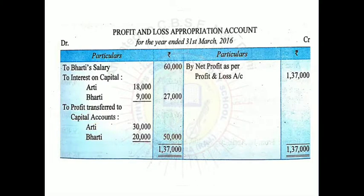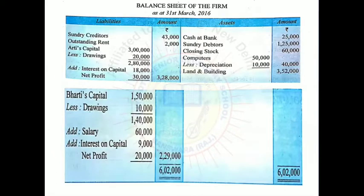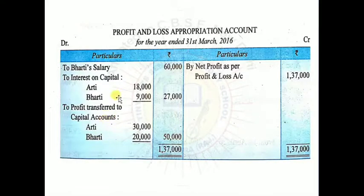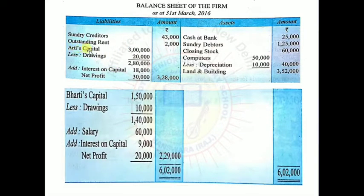This balancing figure of Rs.50,000 is distributed between Arti and Bharti equally. Now complete the balance sheet — don't forget to add closing stock Rs.60,000 on the asset side. For Arti's capital: opening capital Rs.3,00,000, less drawings Rs.20,000, plus interest on capital Rs.18,000, plus share of profit Rs.30,000 — Arti's final capital = Rs.3,28,000.